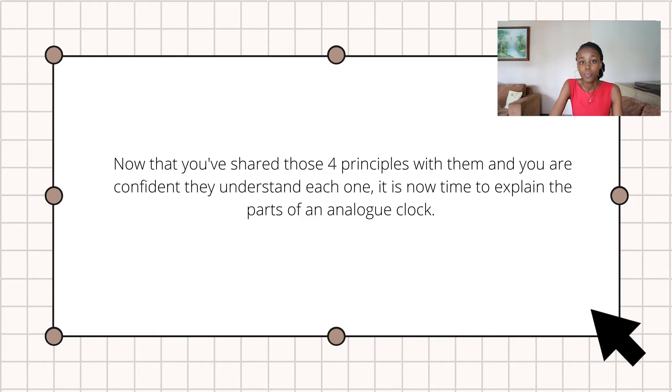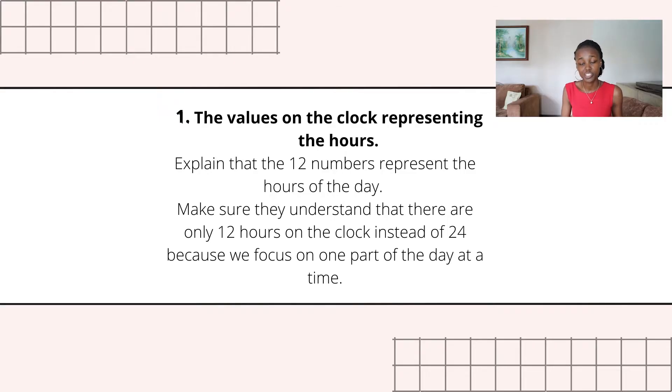Now it's time to explain the parts of an analog clock. There are four main parts that you are going to focus on. Your analog clock should only have 12 numbers representing the hours of the day. Explain to your child that those numbers represent the hours in a day, and that we only focus on the first part of the day and the second part of the day at a time — which is why the clock only has 12 numbers and not 24. Go back to your visual aid and remind them that a day is split into two parts.